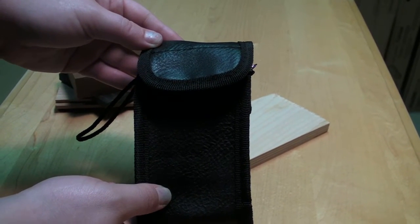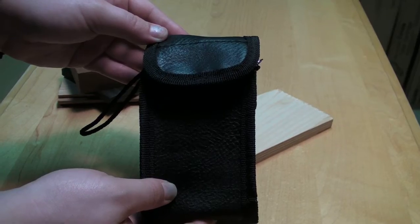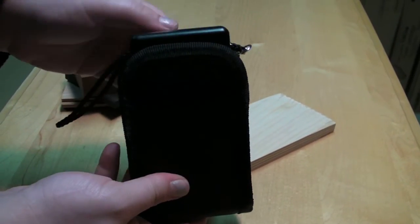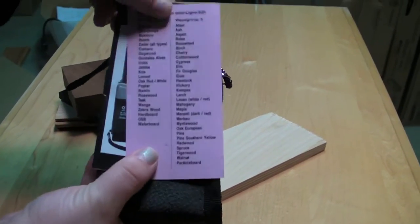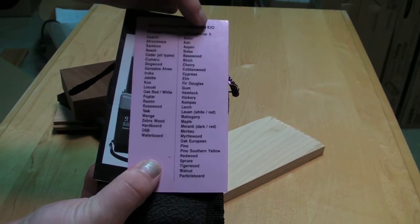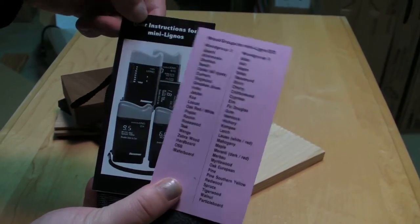The following is an instructional video for the Mini Ligno ED. The ED comes equipped with a laminated species card with wood groups 2 and 3, as well as an instructional manual.